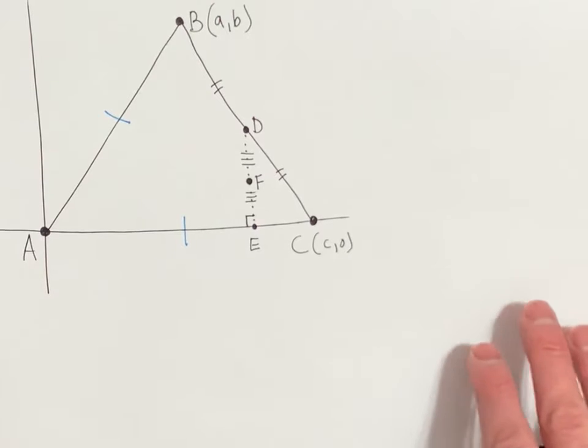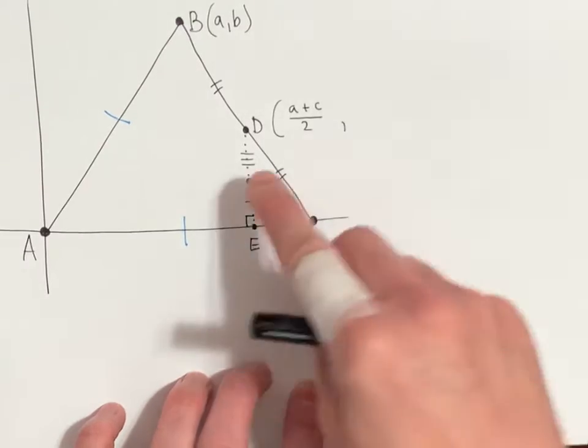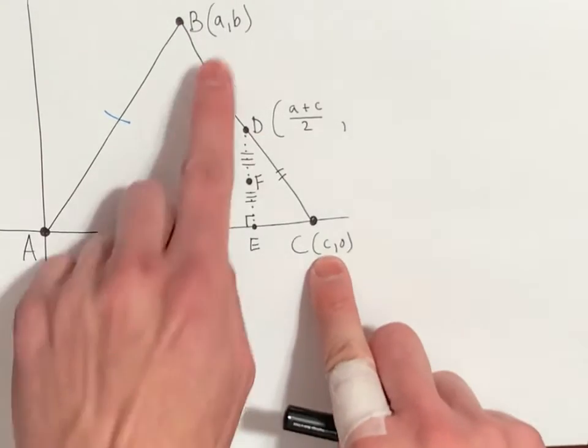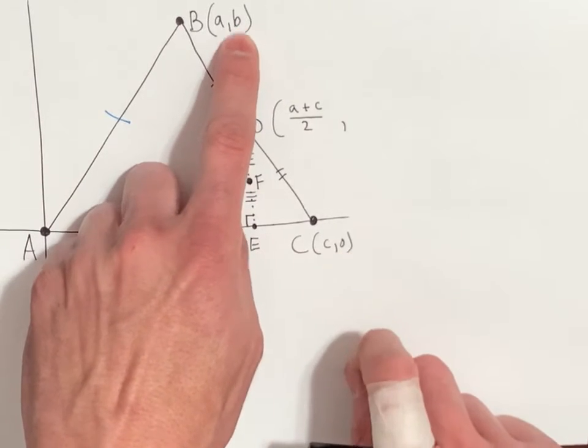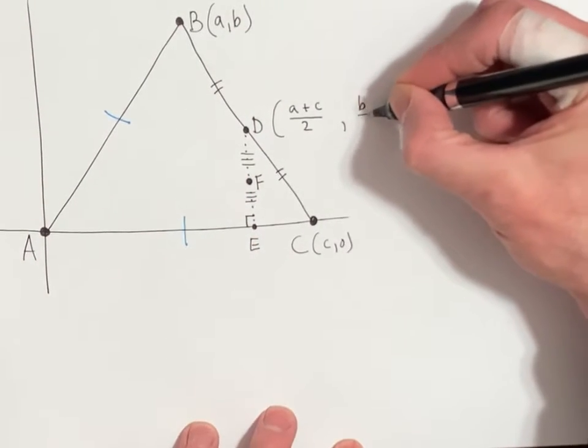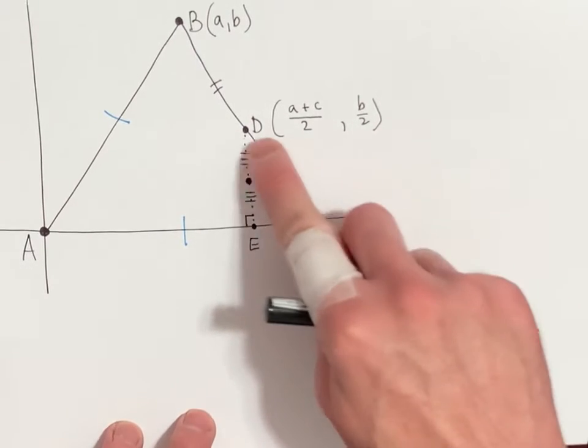How do you find the midpoint? You add the x's divided by 2, you add the y's divided by 2. A plus C over 2, that's the x coordinate of point D. Now average the y's. B plus 0 is B, divided by 2, so it's B over 2. These are the coordinates of point D.